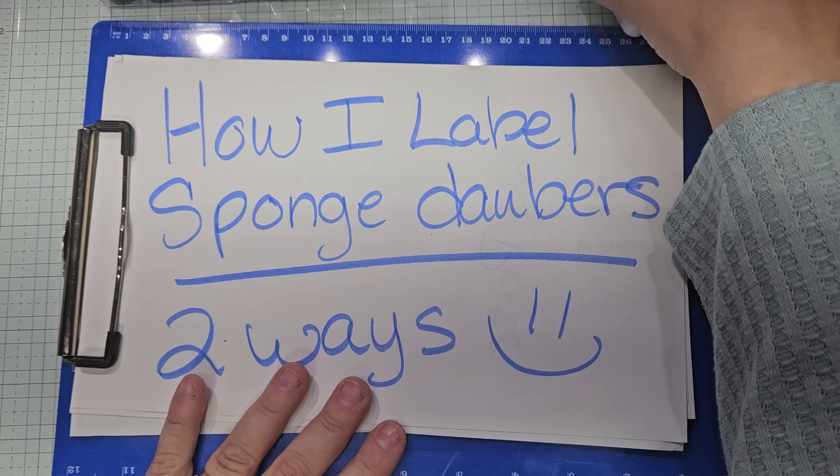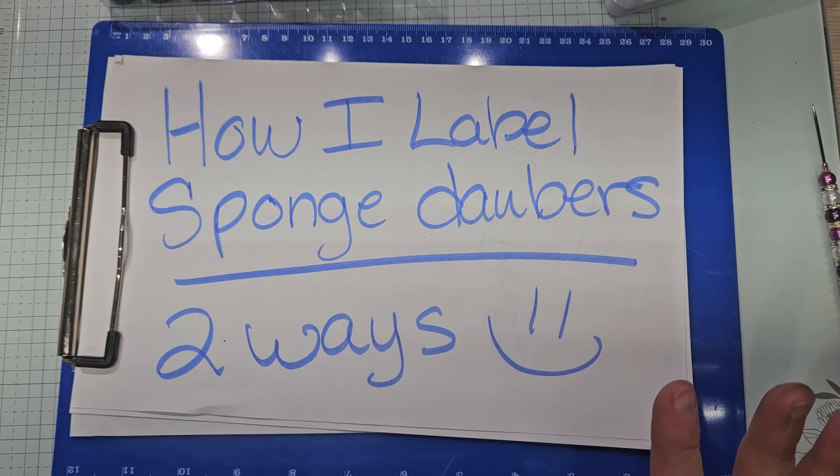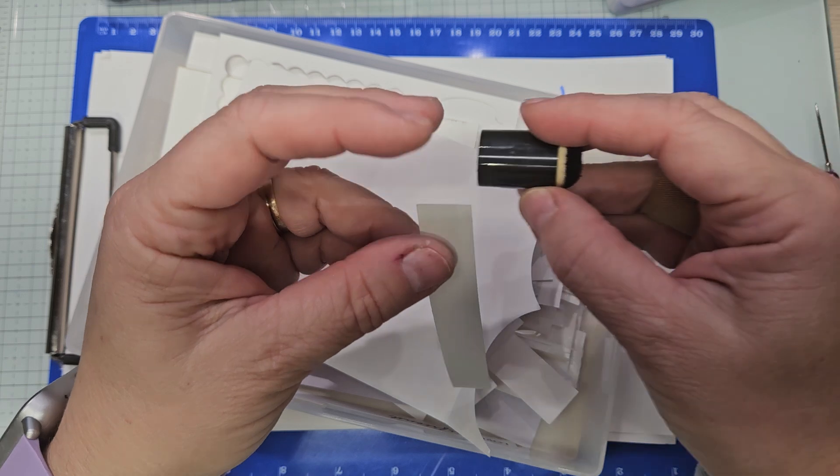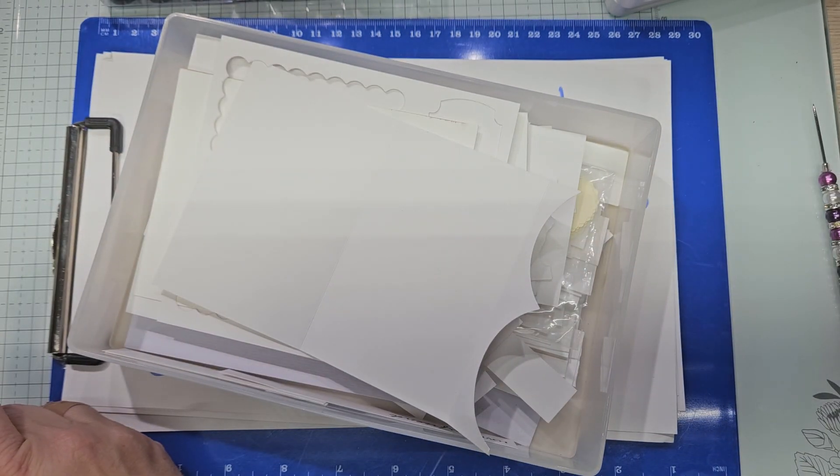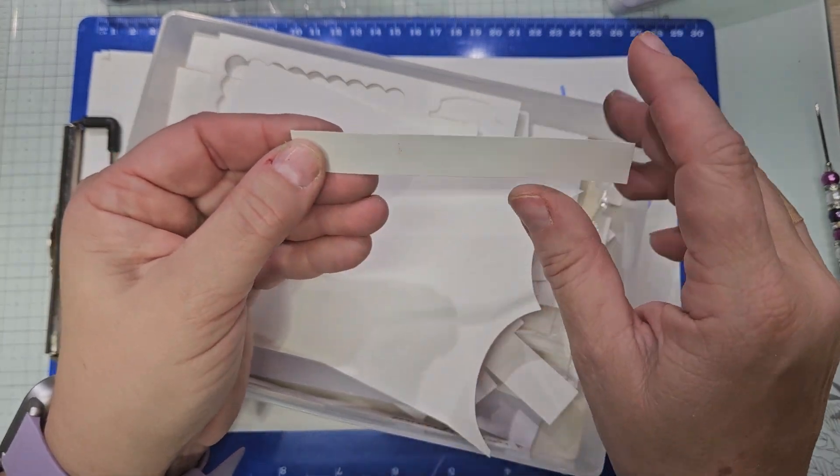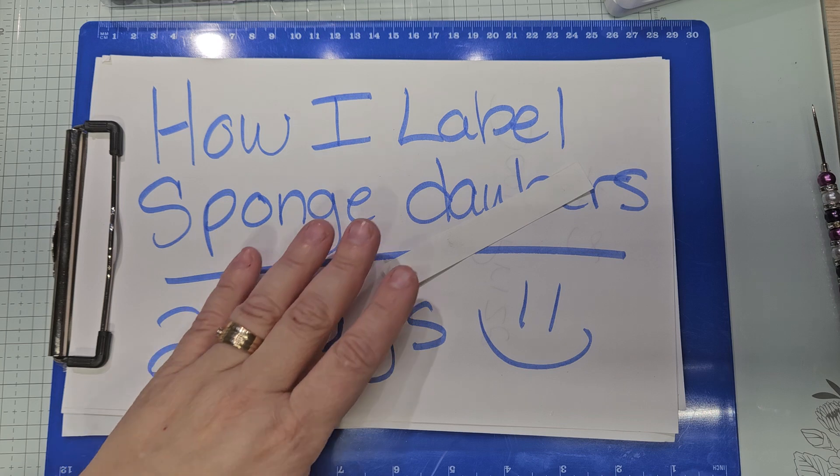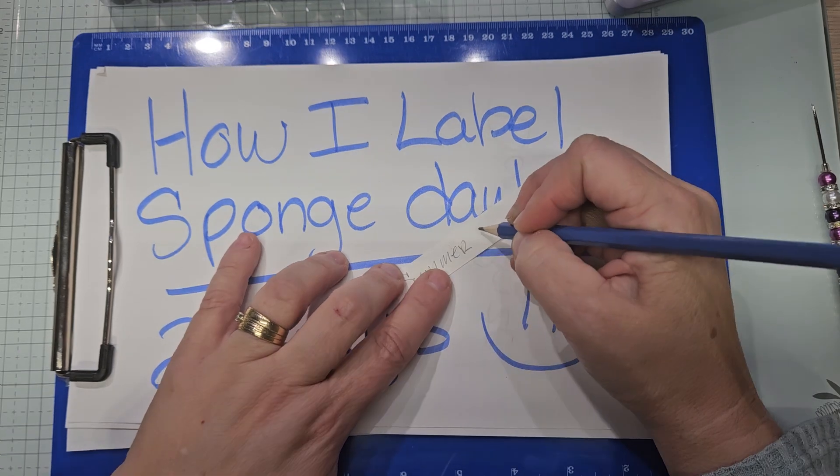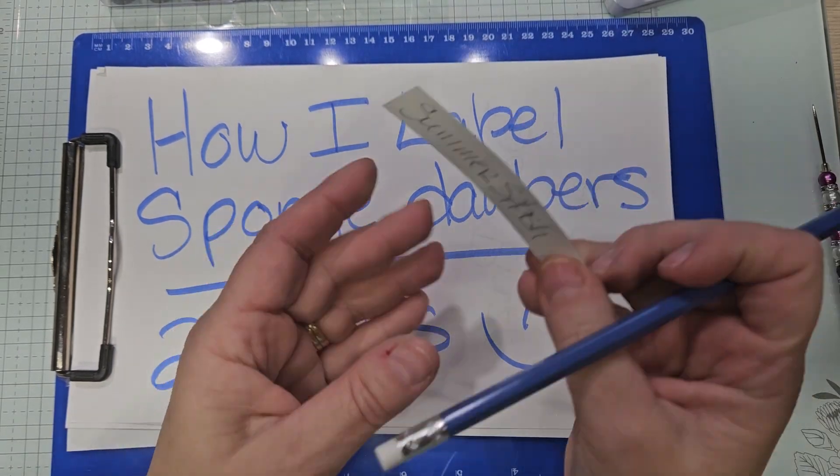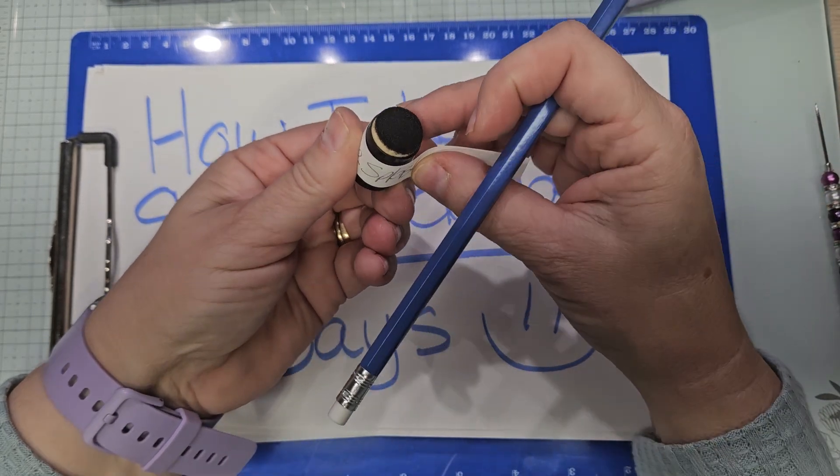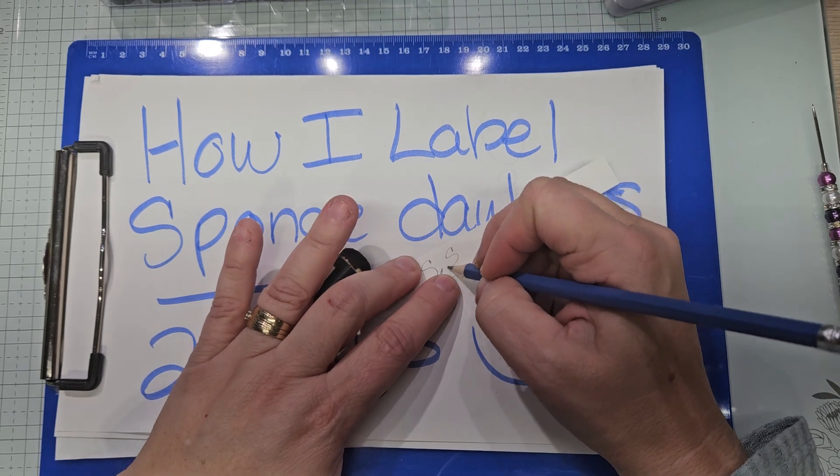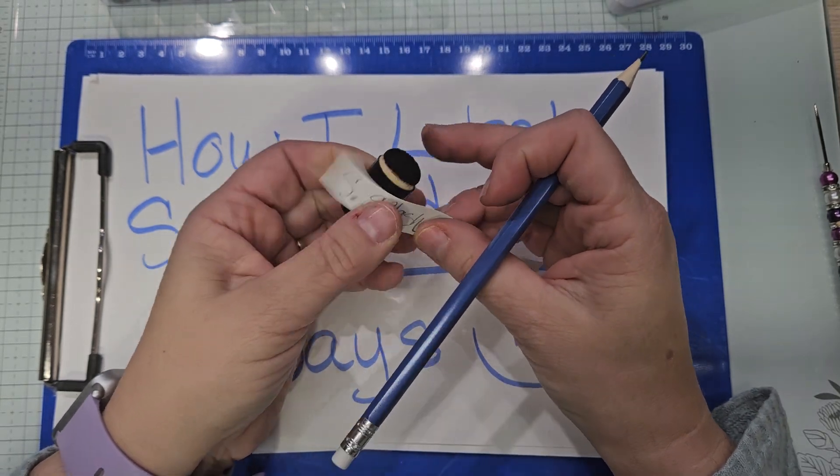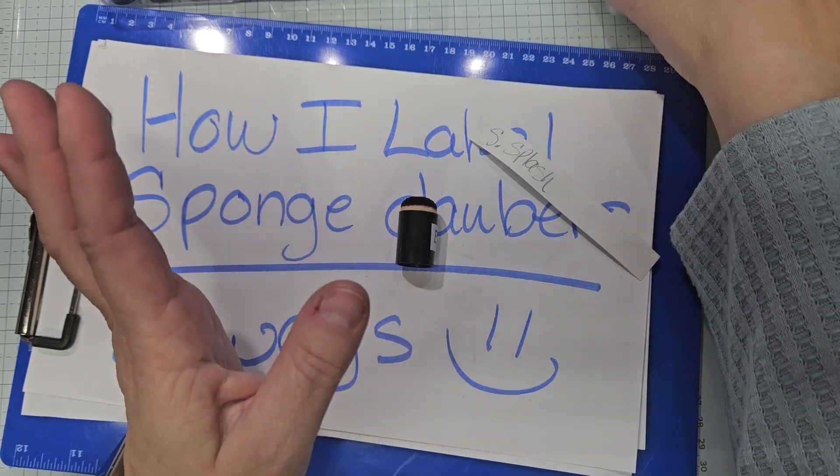Let me show you a couple of ways to do this. First simple way would be to take a scrap of cardstock. This is a little over a half an inch, and you can physically write the name. I would do S dot splash if I was handwriting it. And then I just took a piece of scotch tape and went around it. But that's how you can do it if you don't have a label maker or the ink pad.